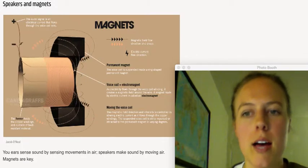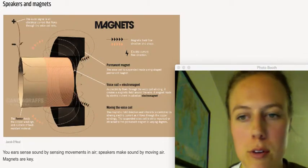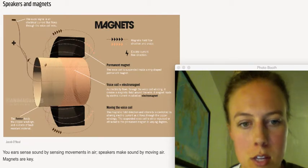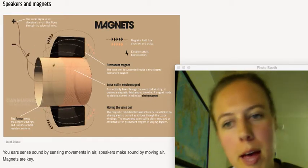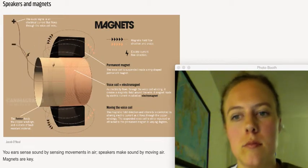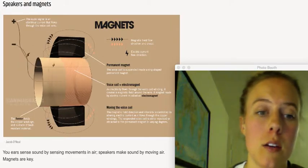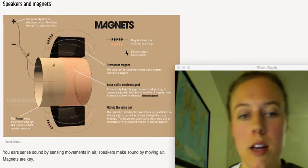If you have any current flowing through a wire, it's going to become magnetic. So it's either going to attract or repel from either another wire carrying current or another magnet.